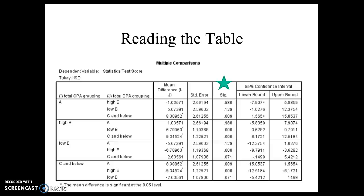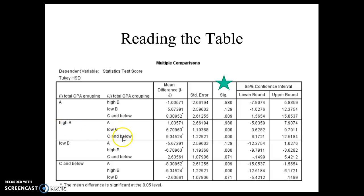Here's what the table is telling you. The significance column is your p-value. You just run through all of these values and find the ones that are significant. So this one's not, this one's not, this one is — it's less than 0.05. This is telling me that my A group and my C-and-below group are significantly different, but there is no significant difference between A and high-B, or A and low-B students. There is a significant difference between high-B and low-B students, and between high-B and C-and-below students. We continue down, and that tells us which combination of groups are significant.